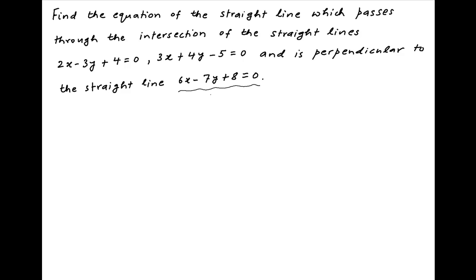The equation of the straight line 6x minus 7y plus 8 is equal to 0 can be written as 7y is equal to 6x plus 8, which implies that y is equal to 6/7 times x plus 8/7. Therefore, the gradient of this line is equal to the coefficient of x, which is equal to 6/7.